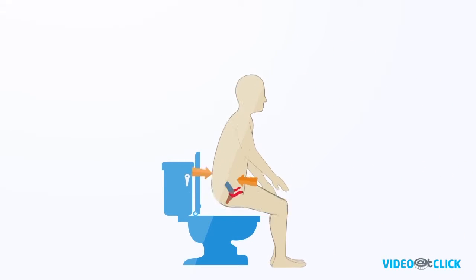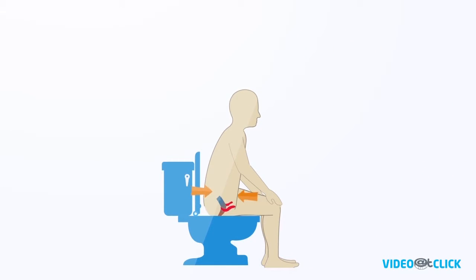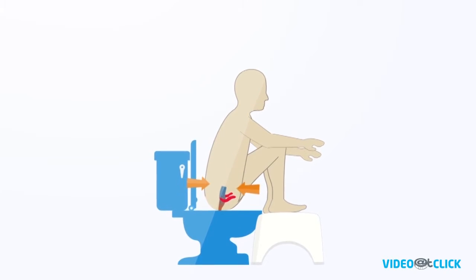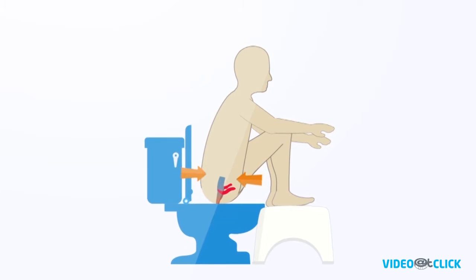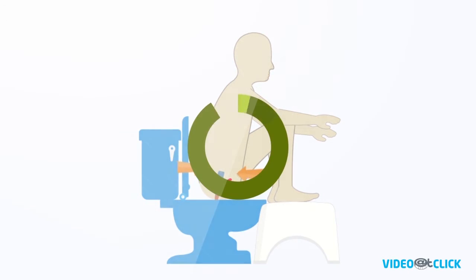Puborectalis muscle when upright. Puborectalis muscle when in sitting position on modern toilet. Puborectalis muscle when using Squatty Lou, allowing for easier and more convenient elimination.